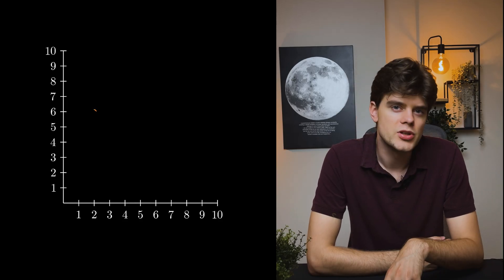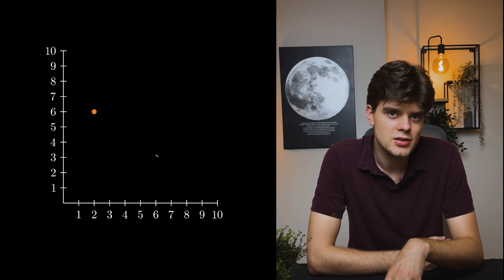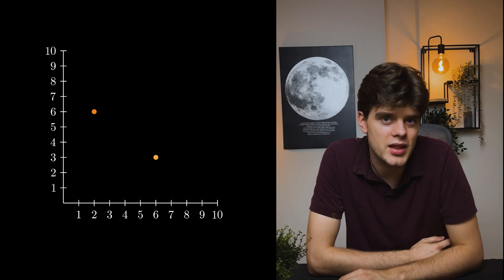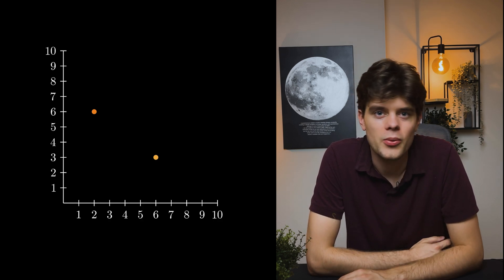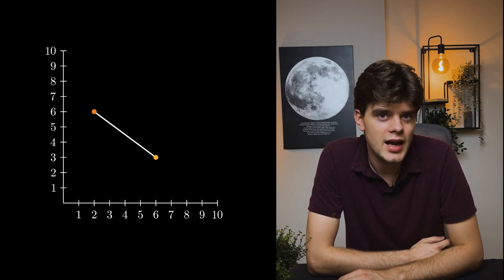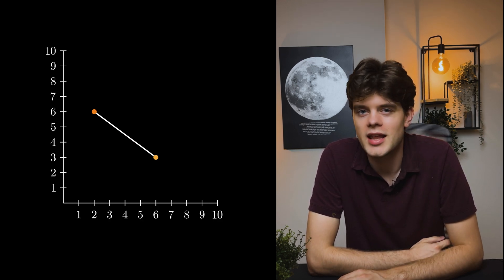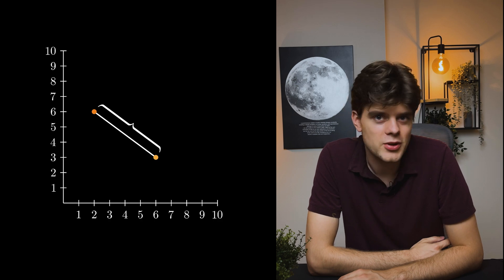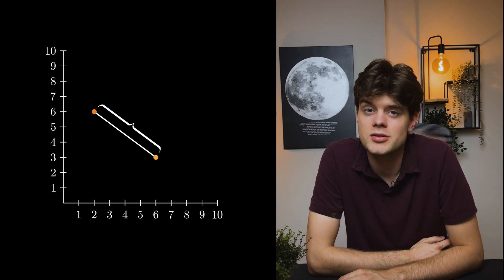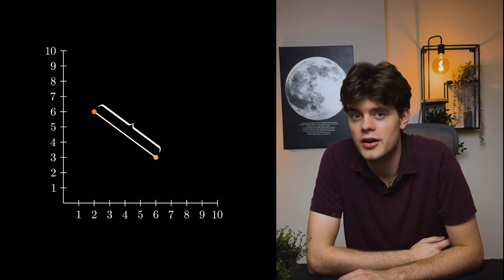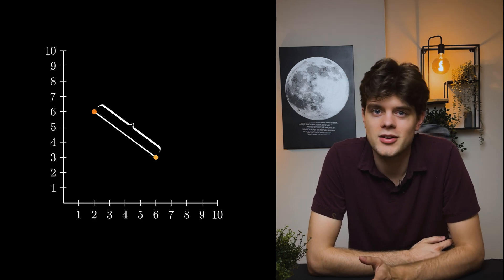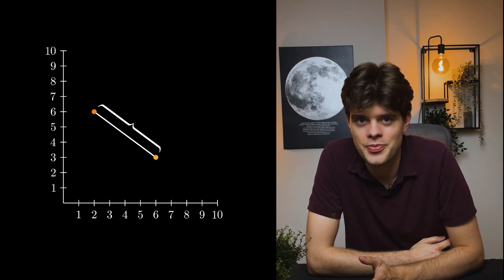Let's say we have two points in 2D space. What is the simplest way to measure the distance between them? Well, we probably would draw a straight line and measure the length of that line. This is Euclidean distance, and the same applies to points in higher dimensional space, as we can draw a straight line that connects two points.